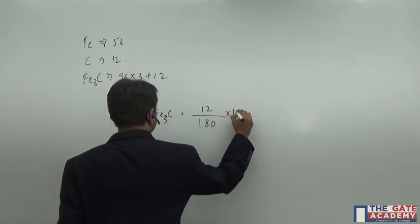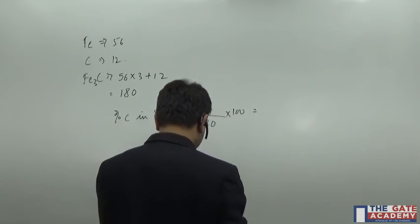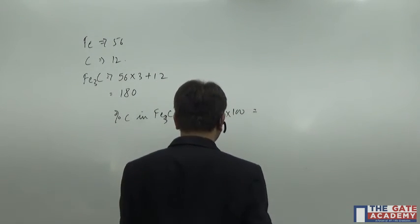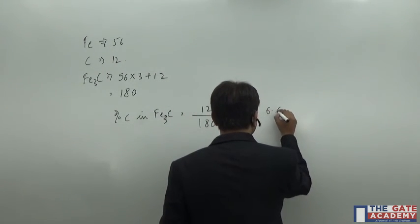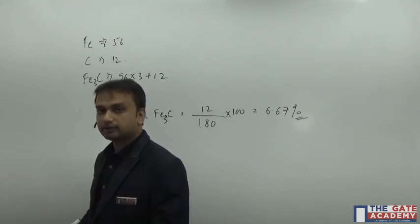That's all, multiply by 100. You will get 12 divided by 180, so it's 6.67. 6.67 percent is the percentage of carbon in Fe3C.